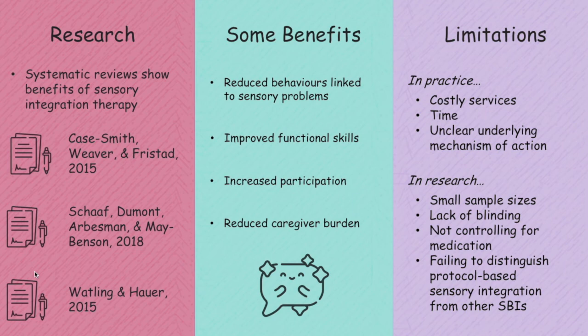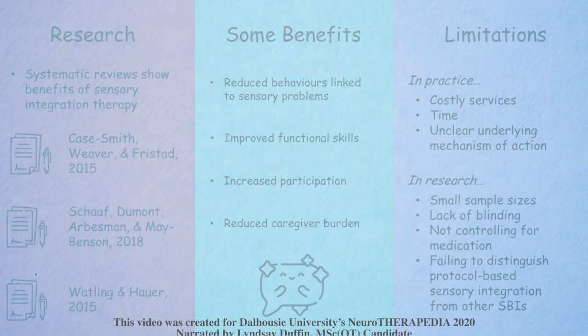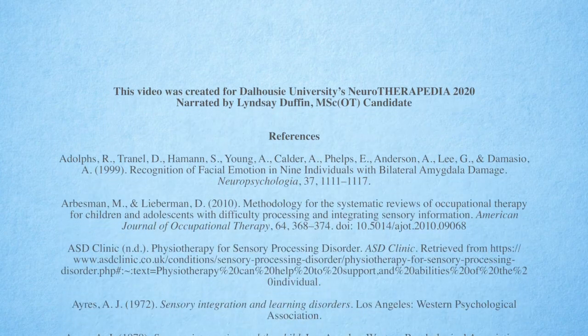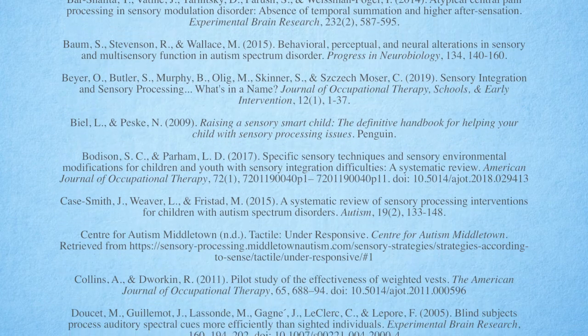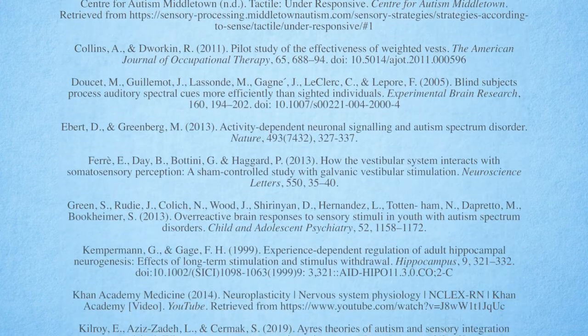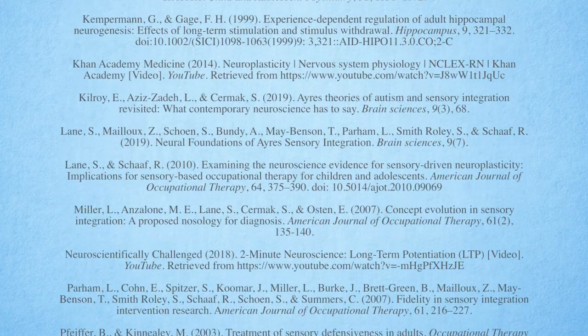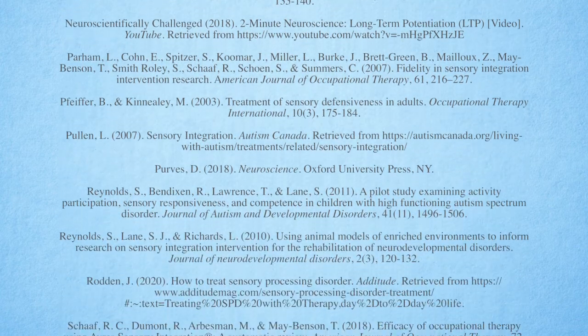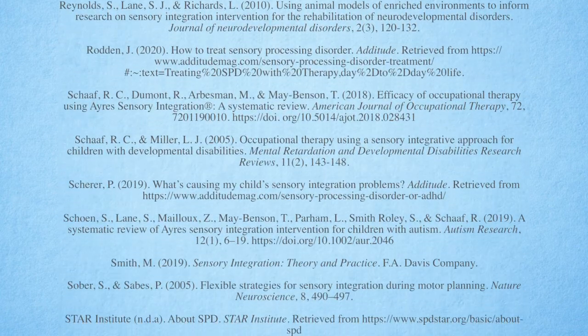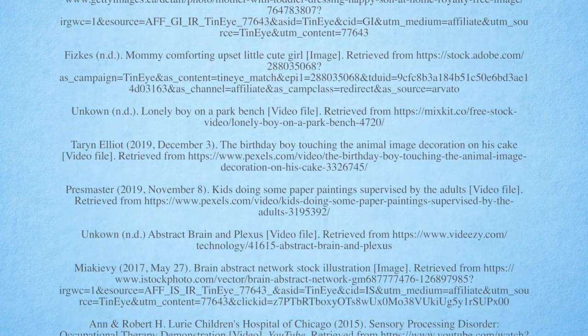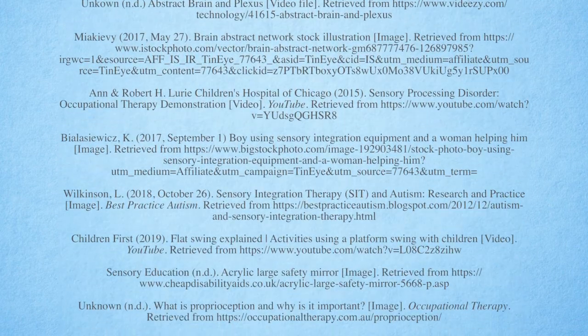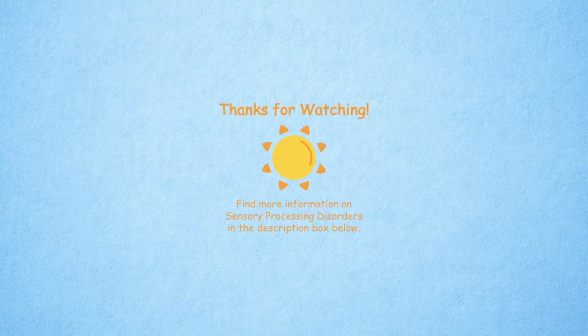Limitations in research include small sample sizes, lack of blinding, not controlling for medication, and not distinguishing protocol-followed sensory integration from other sensory-based interventions. To build evidence, higher-level studies that address these limitations should be conducted. Also, the underlying neuroscience remains largely theoretical, and future animal model and human studies should be conducted to better understand the neural mechanisms of the disorder and how sensory integration therapy is affecting change.